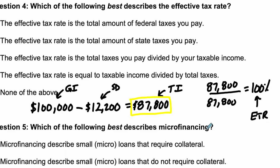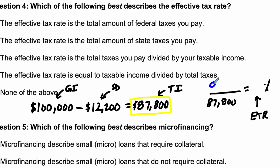Now you're not going to pay 100%, but instead you're going to pay less than that. This number up top is going to change, and that's going to alter our percentage. So for example, let's lower it. Let's say you pay $8,780. Now that divided by $87,800 is 10%. So your effective tax rate would be 10%. You're paying 10% of your taxable income.